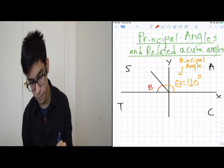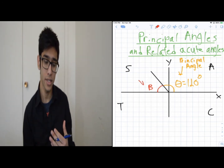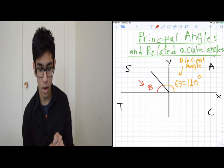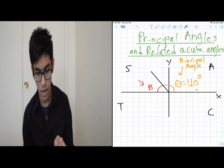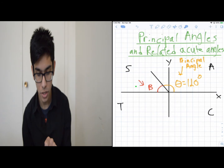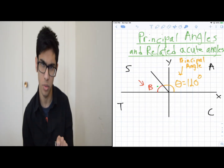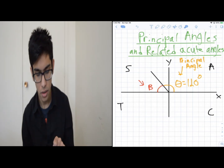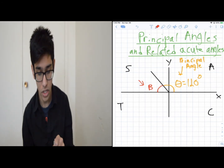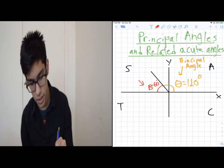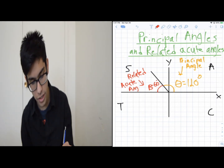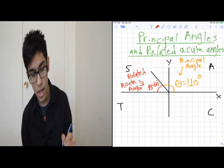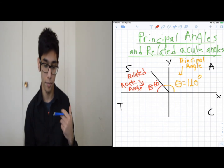Let's call the smaller angle beta — the related acute angle. If theta is 120 degrees, then 180 minus 120 gives us beta equals 60 degrees, because a full half-circle is 180 degrees. So beta is 60 degrees. This small angle is called the related acute angle — it's the angle I can relate back to what I already know.